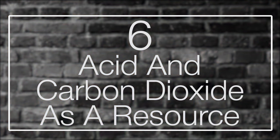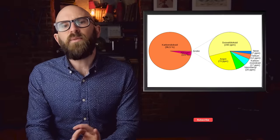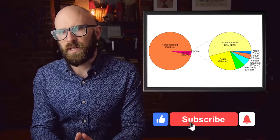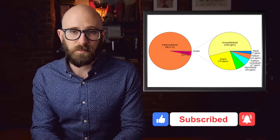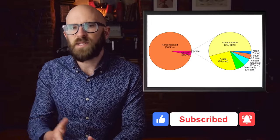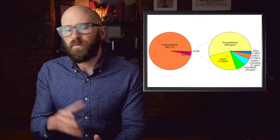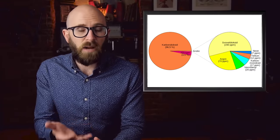6. Acid and Carbon Dioxide As A Resource. Even if we could get cloud cities set up on Venus, there are still lots of logistical problems that need to be handled. How do we produce air, water, and power? Well, the Venusian atmosphere already has much of what we need.